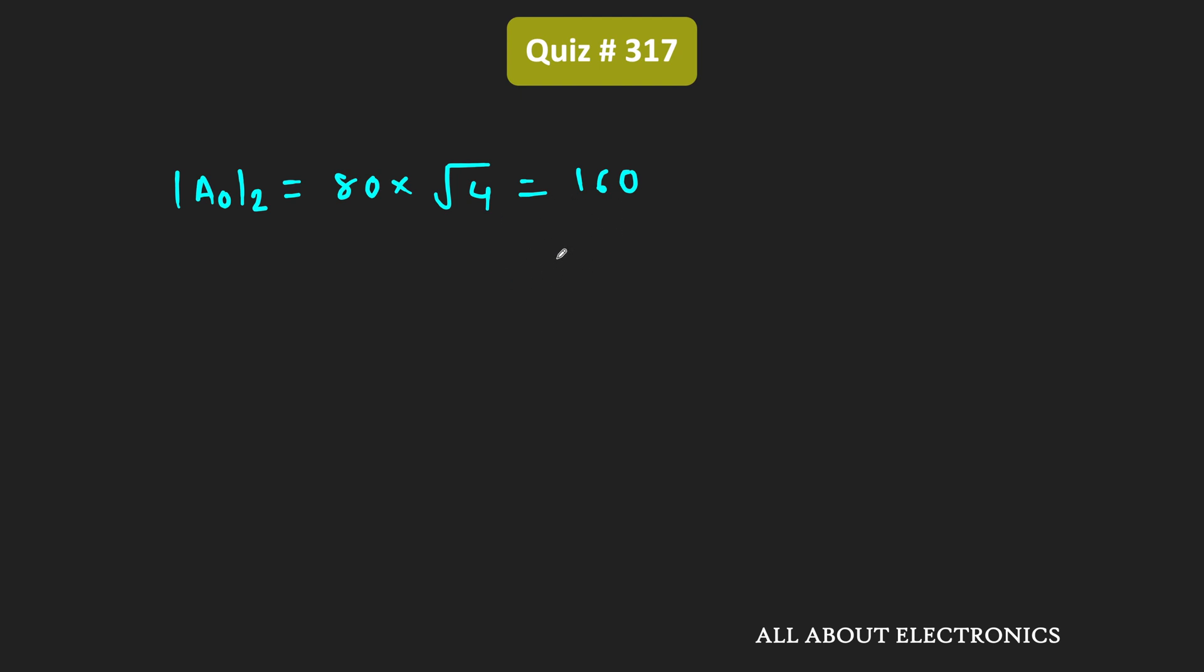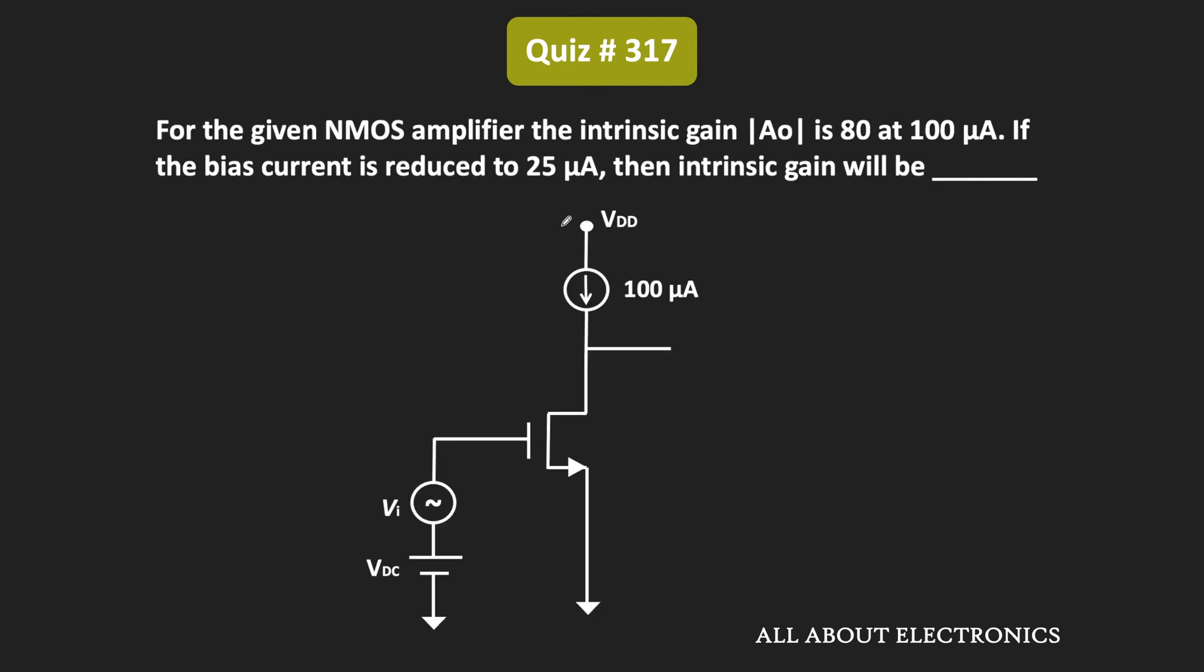That means as the bias current becomes 1 by 4, then this intrinsic gain will become double. That means from this we can say that for the bias current of 25 microampere, this new intrinsic gain will be equal to 160.